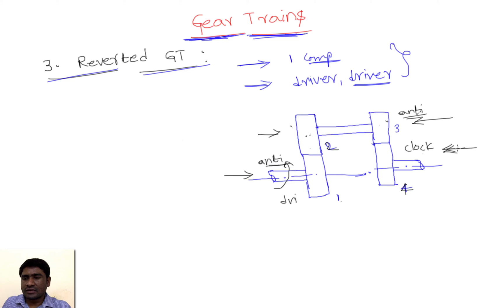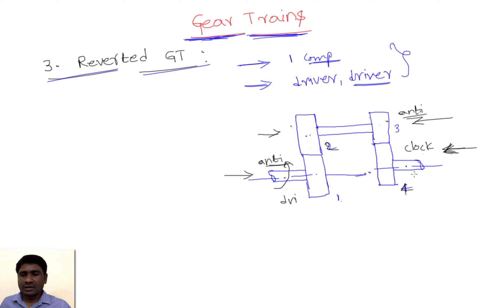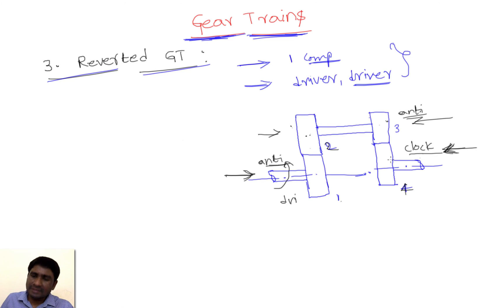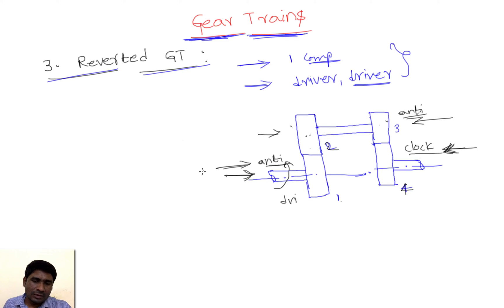The driver is rotating anti-clockwise while the driven gear 4 is rotating clockwise when viewed from the right side. In problems, the direction of rotation of the driver or driven gear and the viewpoint must be clearly mentioned, because the same gear can appear to rotate clockwise from one side and anti-clockwise from the other. Gears 2 and 3 here are compound gears, and the driver and driven shafts are collinear.